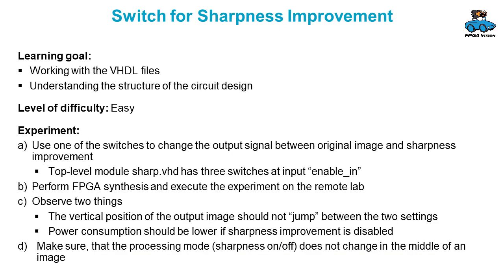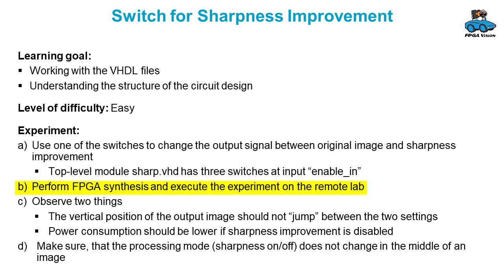Another experiment is implementing a switch for the sharpness improvement. That is a relatively easy experiment. The FPGA board we provide has three switches, and you can use one of the switches to switch between the original image and sharpness improvement. Perform synthesis and try out the experiment on the remote lab. There are two things that you should observe.